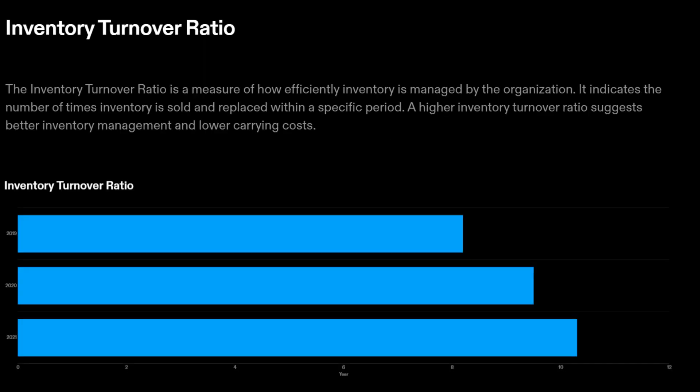Inventory Turnover Ratio: The inventory turnover ratio is a measure of how efficiently inventory is managed by the organization. It indicates the number of times inventory is sold and replaced within a specific period. A higher inventory turnover ratio suggests better inventory management and lower carrying costs.